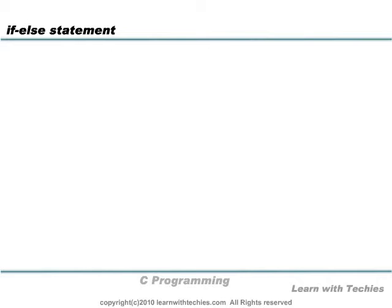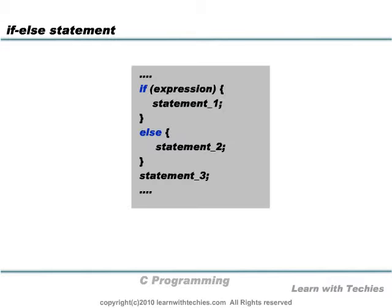It's used to express decisions, the way we use in our verbal language. The normal syntax is given here. The expression enclosed in the if bracket is evaluated to determine which part of the if-else statement will be executed. If the expression evaluates to true, then the statement enclosed by the if part, that is statement 1, is executed. Then the control jumps to statement 3, skipping the else part.